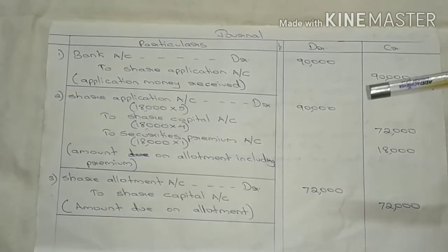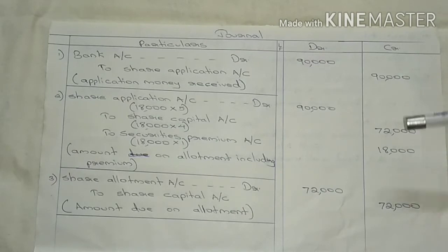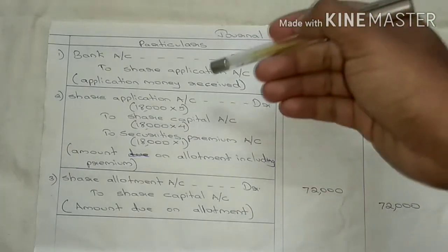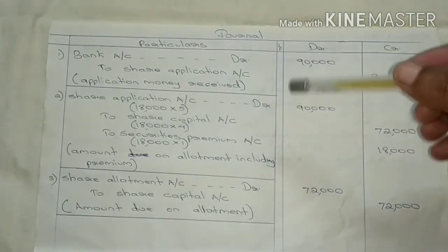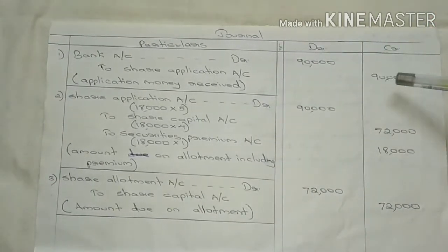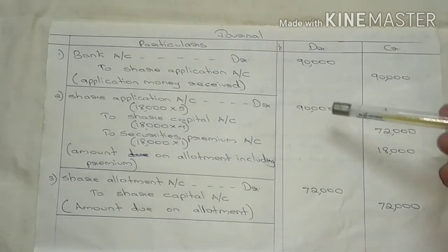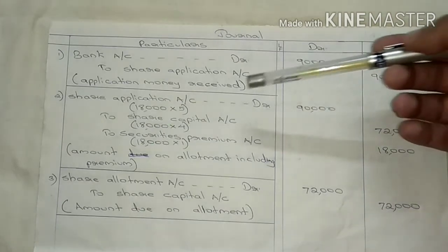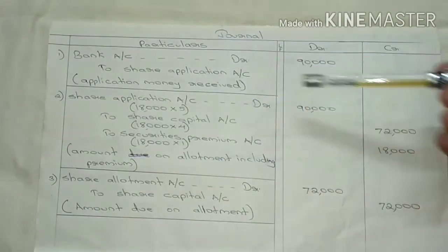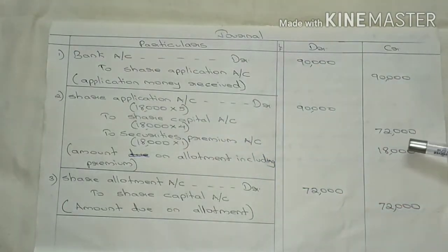The first entry: Bank Account debited to Share Application Account — application money received ₹90,000. That is 18,000 shares at ₹5 each = ₹90,000. Then Share Application Account debited to Share Capital Account — 18,000 shares at ₹4 each = ₹72,000 transferred to capital.